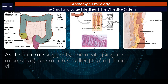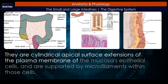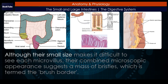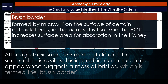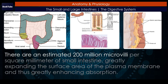Microvilli. As their name suggests, microvilli (singular: microvillus) are much smaller — about 1 micrometer — than villi. They are cylindrical apical surface extensions of the plasma membrane of the mucosa's epithelial cells, supported by microfilaments within those cells. Although their small size makes it difficult to see each microvillus, their combined microscopic appearance suggests a mass of bristles, termed the brush border. Fixed to the surface of the microvilli membranes are enzymes that finish digesting carbohydrates and proteins. There are an estimated 200 million microvilli per square millimeter of small intestine, greatly expanding the surface area of the plasma membrane and thus greatly enhancing absorption.